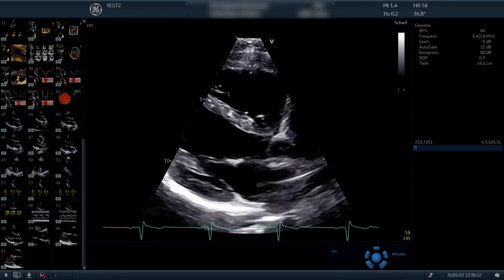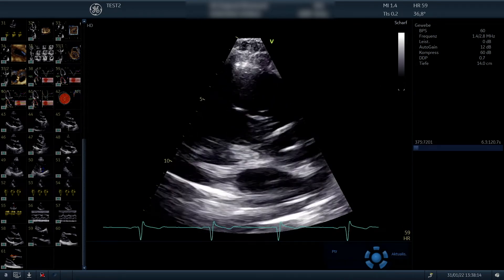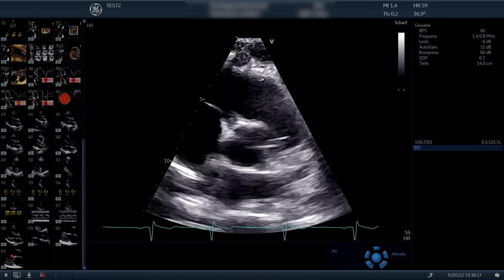From the parasternal long axis view, we now go to the parasternal short axis view. This is achieved by rotating the transducer.